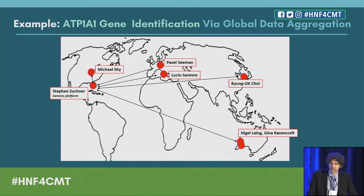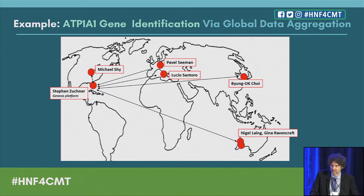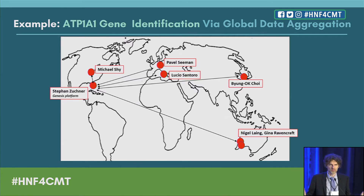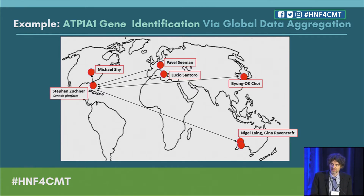Here is an example of a gene we just published a few months ago — it's called ATP1A1. We've stopped giving these genes numbered names like CMT2FX because we've reached Z and beyond, so we just use the gene name. For this publication, scientists from the most unlikely places came together — from Czech Republic to South Korea to the United States. Because we work collaboratively and aggregate data in the Genesis Project, we're able to immediately find these families across the world, which is very important scientifically to make a strong case.